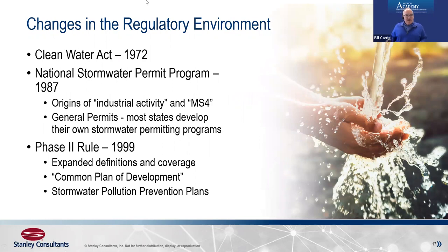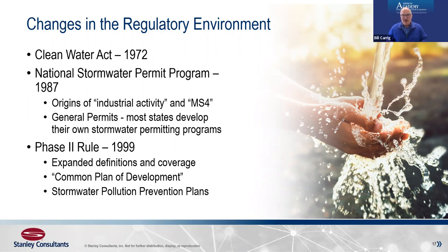Turning to the regulatory environment — a lot of us have heard about rivers catching on fire in Ohio in the late 1960s and early 70s. The Clean Water Act was implemented during the Nixon administration in 1972. In the 1980s, the National Stormwater Permit Program was established, giving us the origins of what's considered industrial activity and adopting the concept of general stormwater permits for facilities engaging in industrial activity. A lot of states develop their own stormwater permitting programs, but they're based on the multi-sector general permit. In the 1990s, the phase two rule expanded definitions and coverage and added stormwater pollution prevention plan requirements.